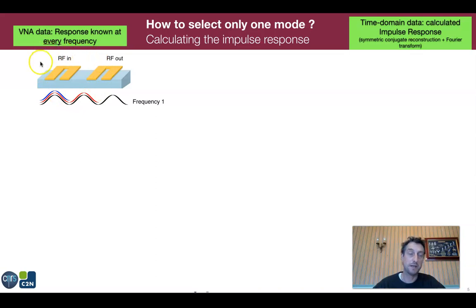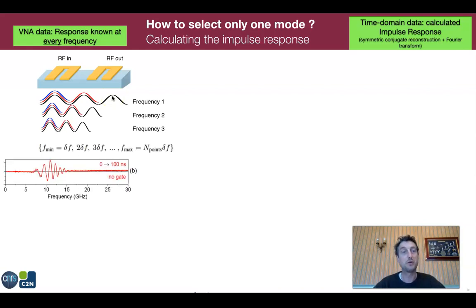When you do a VNA measurement, you measure the transmission coefficient from the input antenna to the output antenna at several frequencies: slow frequencies, fast, and very fast frequencies. From each frequency point, you reconstruct the transmission spectrum.